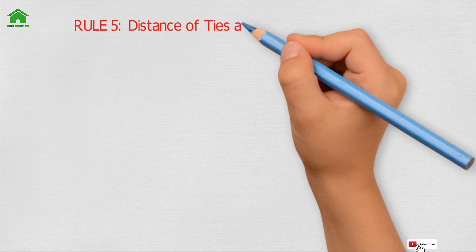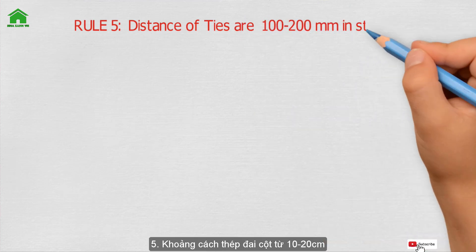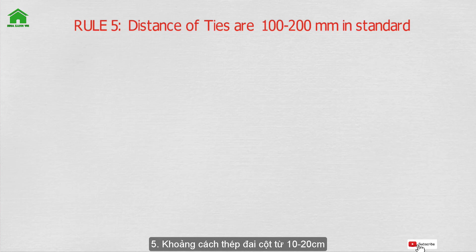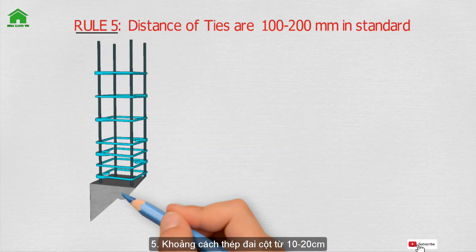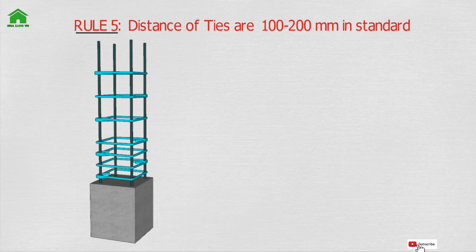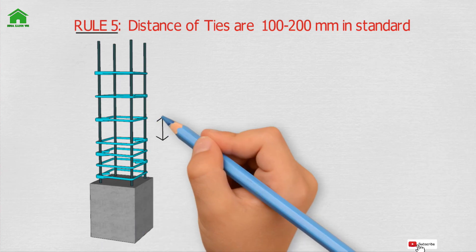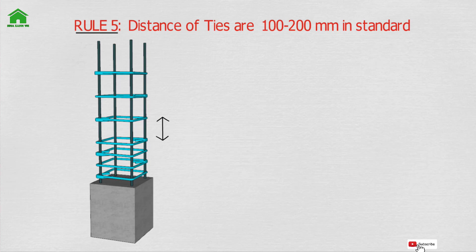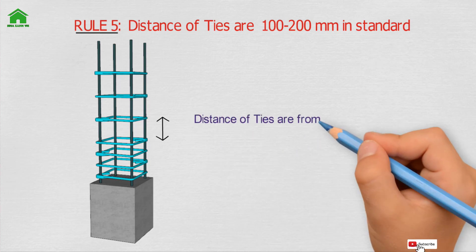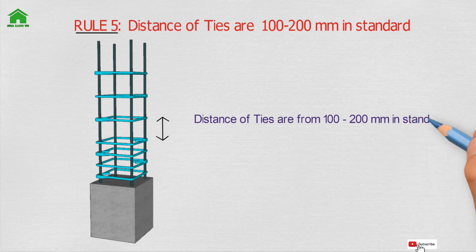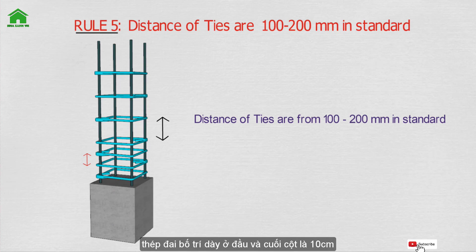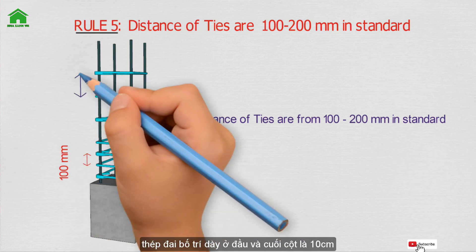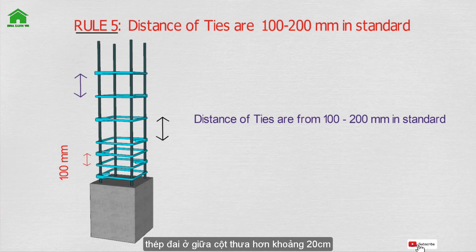Rule number five: the spacing of ties should be from 100 to 200 mm in standard sections. In the extended zone the spacing is about 100 mm, and in the standard zone it is about 200 mm.